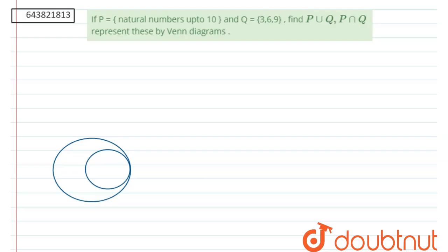Hello everyone, the question is if set P has elements natural numbers up to 10 and set Q has elements 3, 6 and 9, then find P union Q and P intersection Q and also represent these by Venn diagrams.